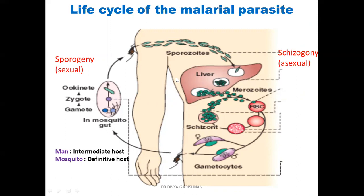So you have two parts: sexual sporogony and asexual schizogony. When a mosquito bites man, it transmits sporozoites into the blood. The sporozoites travel to the liver where they reproduce asexually — this is called tissue schizogony — and the product of this tissue schizogony is merozoites.